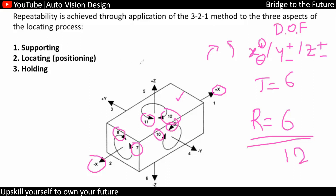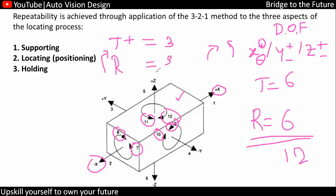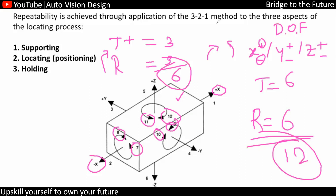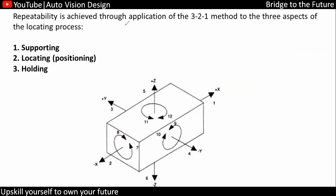Some people might know 6 degrees of freedom — that will be only positive translation with respect to 3 axes, and then rotation only clockwise 3, so that concludes 6 degrees of freedom. Both conventions — 6 or 12 — are the same. Degrees of freedom is used to make sure in which direction we are locating the part.